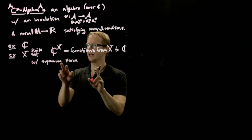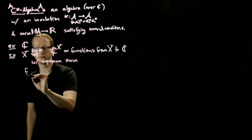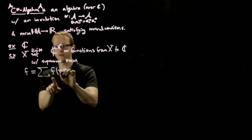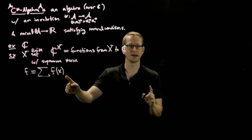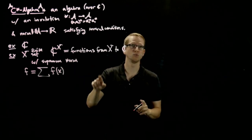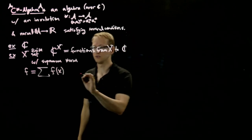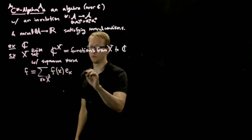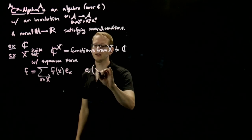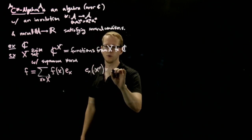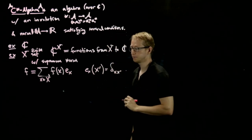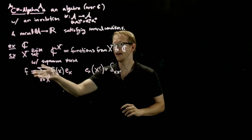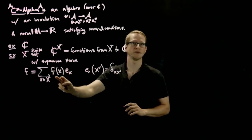Notice that every element of this vector space — every function on C(X) — can be written as a sum: take the function evaluated at element x, multiplied by the unit vector e_x that takes the value 1 at x and 0 everywhere else. So e_x is the function that, when you plug in x-prime, gives the Kronecker delta δ_{x,x'}. This enables us to understand the supremum norm: the norm of f is just the max over x of |f(x)|.